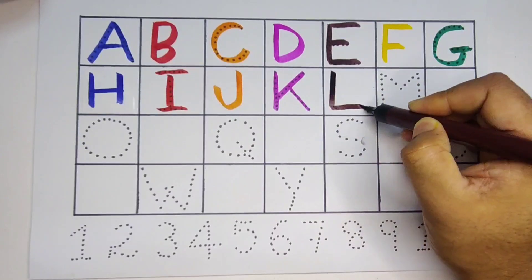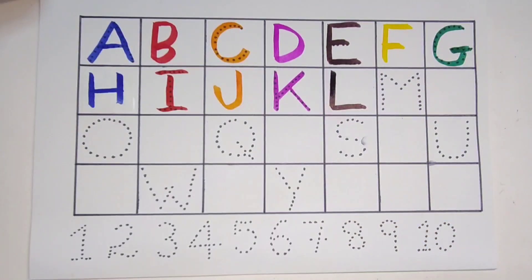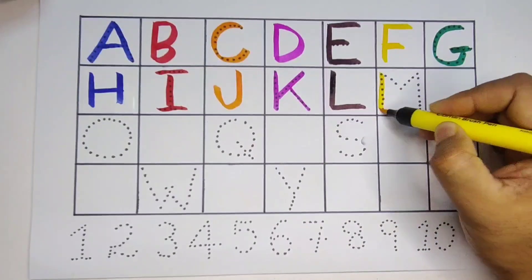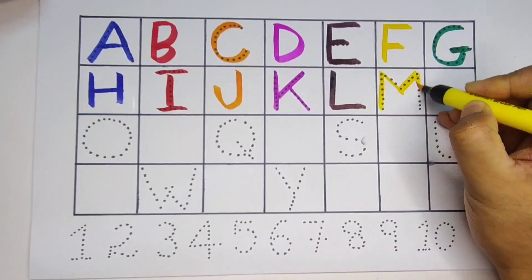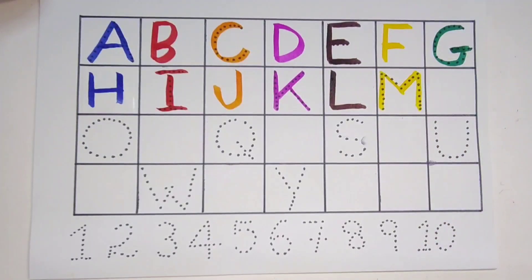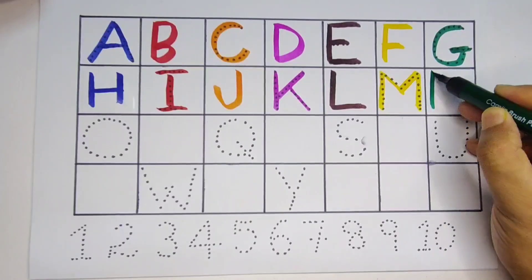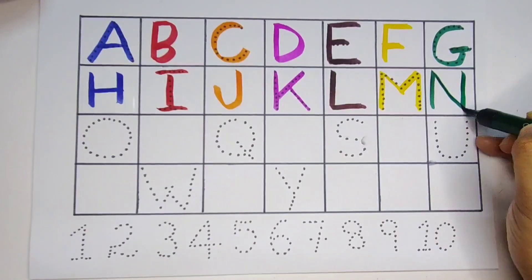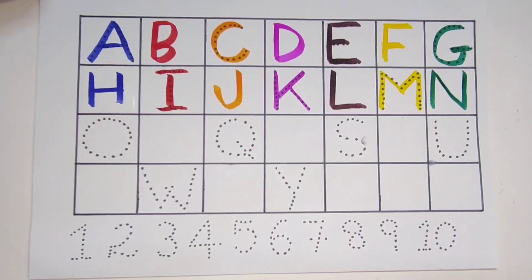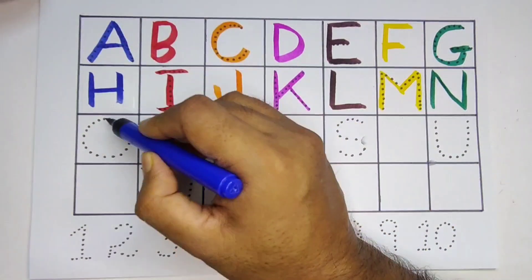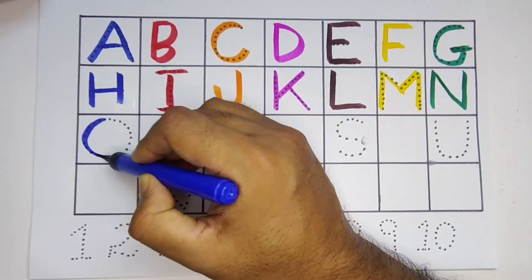Chocolate color, L, L for leather. Yellow color, M, M for monkey. Green color, N, N for nest. Blue color, O, O for orange.